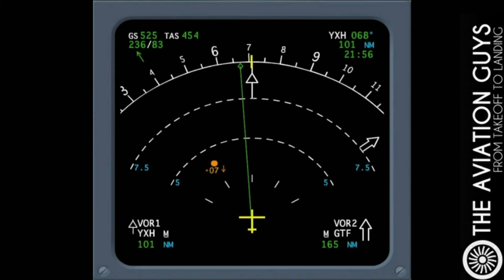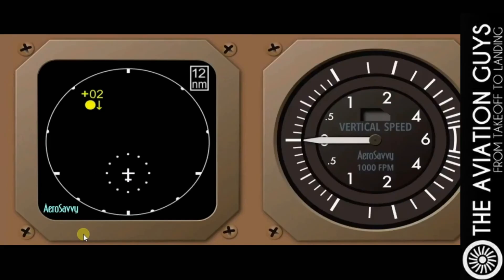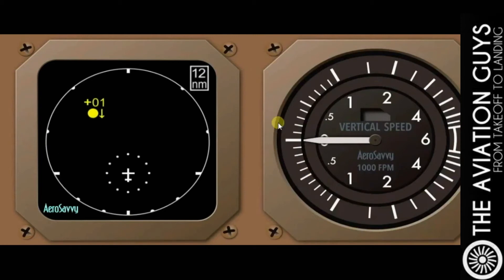Now the intruder comes within 4 nautical miles. The diamonds turn to an amber dot, and this time the TKS system calls out a traffic alert. You can see the vertical speed indicator and the TKS screen — the intruder is now descending. This is called a Traffic Advisory.